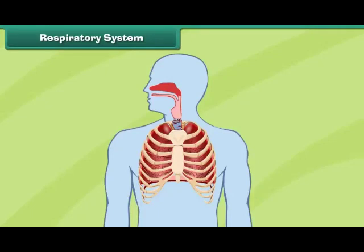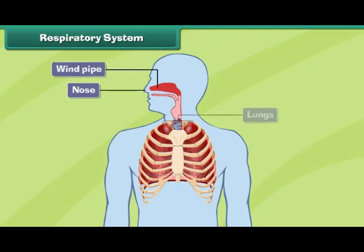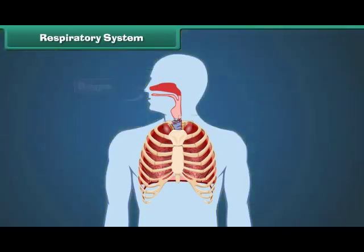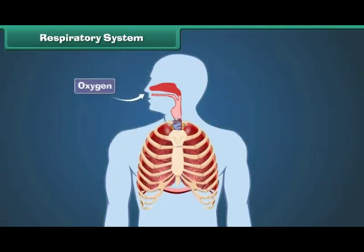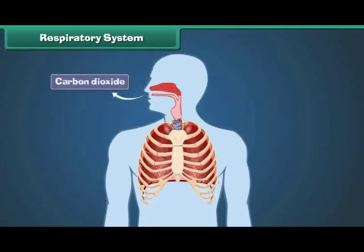Respiratory system: The human respiratory system is made up of the nose, windpipe, and lungs. It helps in taking oxygen from the air and removing carbon dioxide from the human body.